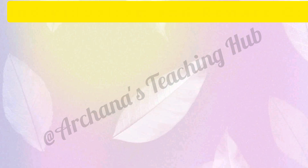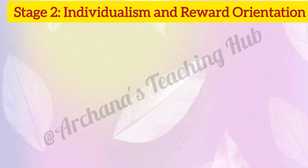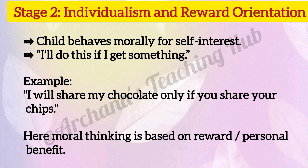Stage 2: Individualism and reward orientation. The child behaves morally for self-interest — 'I will do this if I get something.' For example, 'I will share my chocolate only if you share your chips.' Here, moral thinking is based on reward and personal benefit.